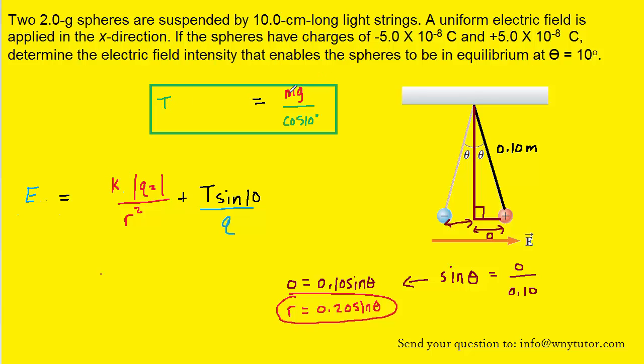Now recall that we had solved for T and came up with the expression of mg over cosine of 10, so we can plug that expression in for T. The sine of 10 divided by the cosine of 10 can either be calculated on your calculator or simplified to the tangent of 10. And finally, recall that R, the distance between the charges, was solved as 0.2 sine theta. So we're going to be able to plug that into the equation right there. And after doing so, notice that it is still squared.